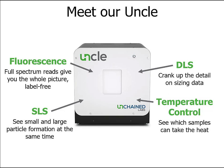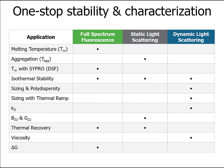UNCLE also combines temperature control with these three detection methods, so you can run samples at room temperature, elevated stable temperature, or across any of a variety of heat ramps to understand how your proteins unfold and change in response to stress. Here's a look at how our three detection methods enable UNCLE's applications. By using all three detection methods in unique ways, UNCLE can give insight into protein stability not available by using one or even two of these methods alone.